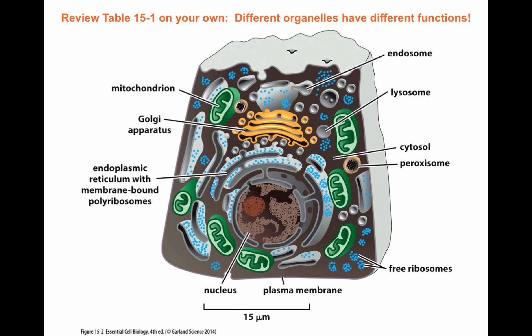On your own, I would like you to review Table 15.1 so you can see the general function of the organelles. What we're going to be doing today is looking at three major organelles: the nucleus, the rough endoplasmic reticulum with the ribosomes attached to it, and the mitochondria. Eventually in the chapter, we're going to look at how membranes generated inside the endoplasmic reticulum are able to move all the way to the Golgi as well as the plasma membrane.